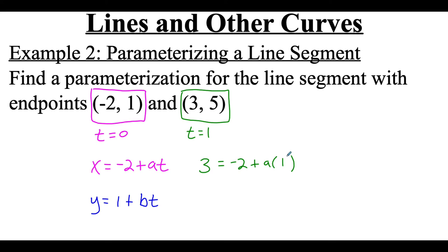So I'm going to fill that in and what I'm going to do is solve this for a so that I can figure out what this a value is that goes in front of this t. Well 1 times a is just a so this is really saying 3 equals negative 2 plus a and then if I add that 2 over to the right hand side that's going to leave me with an a value of 5. So I can rewrite this x equation with that a value plugged in. So this would be x equals negative 2 plus 5t.